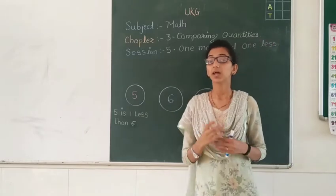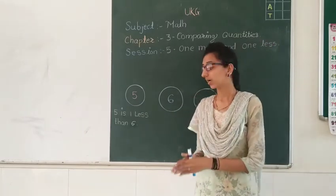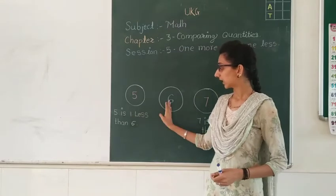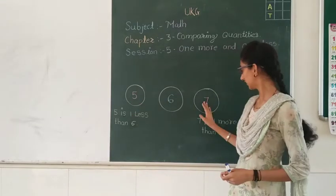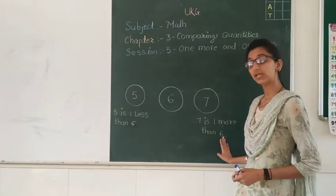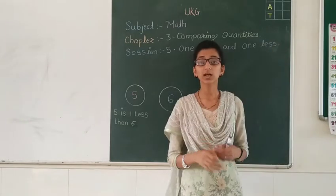Why? Their quantity is different. 5 is less than 6, and 7 is one more than 6.